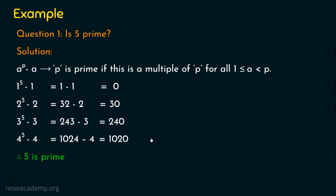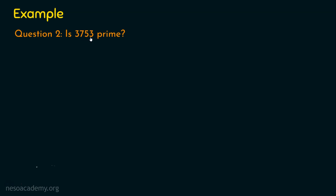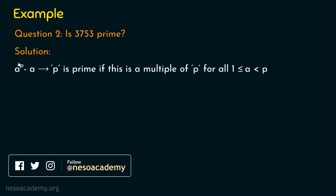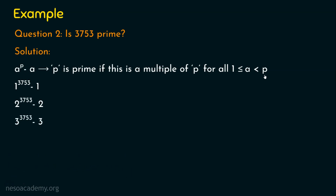If you observe this algorithm keenly, there are a few major drawbacks. One major drawback: if the number being tested is a large prime, this process has to be carried out up to p − 1. That's the biggest drawback. We can see this in the next example. The question is: is 3753 prime? We would need to compute a^p − a for a = 1, 2, 3 all the way up to a = 3752. Manually working that out becomes a very tough job.